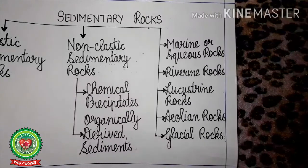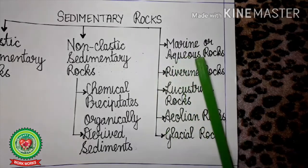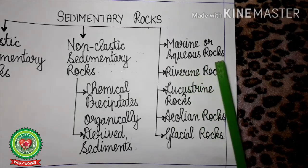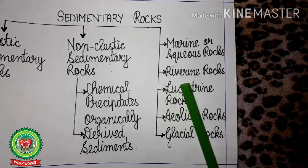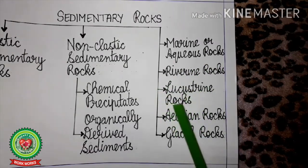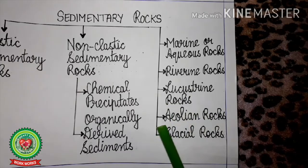According to mode of formation, sedimentary rocks are classified into five types: number 1, marine or aqueous rocks; number 2, riverine rocks; number 3, lacustrine rocks; number 4, aeolian rocks; number 5, glacial rocks.